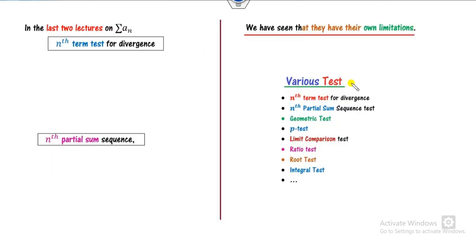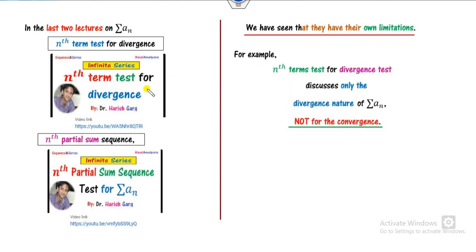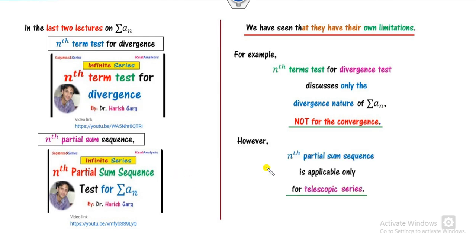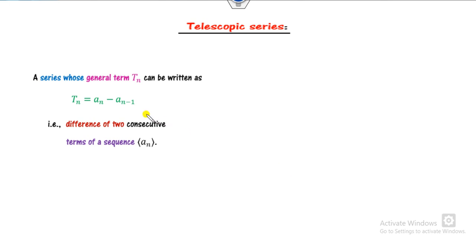In our last lectures, we discussed that there are various tests to analyze whether a series is convergent or divergent. In the last two lectures, we discussed the nth term test and the nth partial sum sequence test. Based on these two tests, we observed they have several shortcomings. For example, the nth term test only discusses the divergence nature of the series but says nothing about convergence. On the other hand, the nth partial sum sequence is applicable only for telescopic series — whose nth term can be represented as the difference of two consecutive terms.